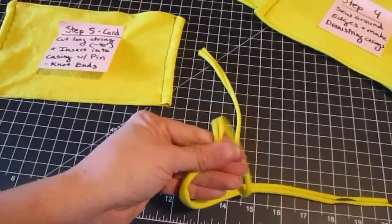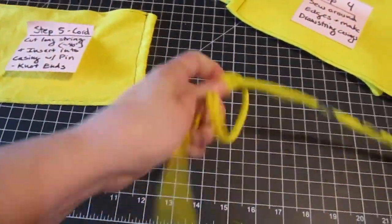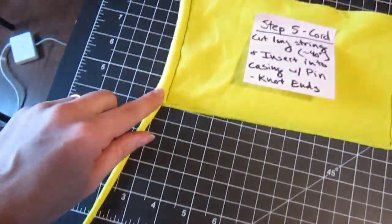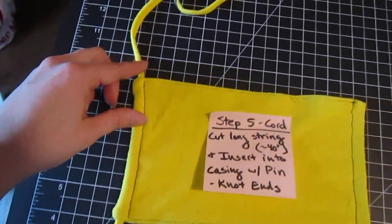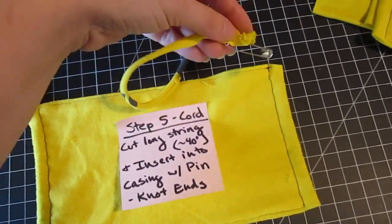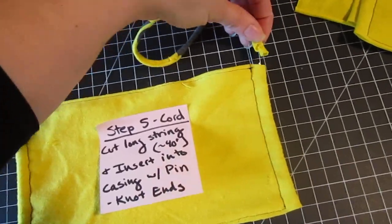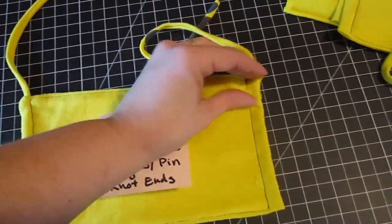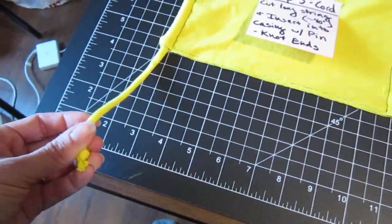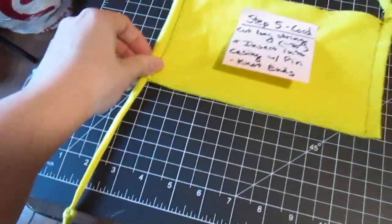But you want it to be strong enough so it won't break, but not too thick that you can't fit it through the casing. So you're going to want to insert it at the bottom and go up the top and then come out here. And again, use a safety pin. Just pin that through it. And then go in and go out. And then when you're done, just knot off the ends. Maybe double knot them so they don't come through.